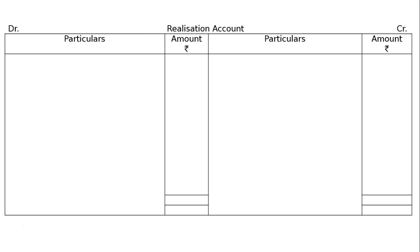There are three important things to note. One is investment fluctuation reserve. A's loan and capital of A is on the credit side, that is the liability side, whereas B's capital is on the debit side. Where investment and investment fluctuation reserve both appear in the balance sheet, investment will be transferred to the realization account debit side and investment fluctuation reserve to the credit side.